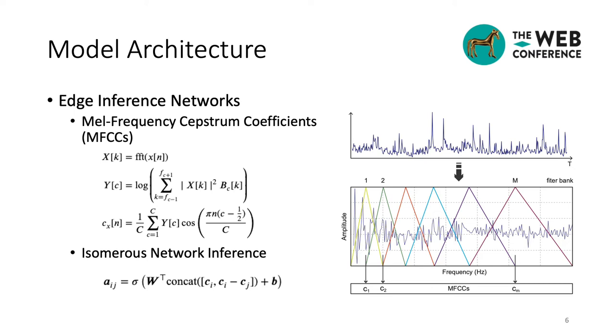Specifically, we choose MEL frequency Cepstrum coefficients, or MFCCs, as great features, which have been widely used in audio signal processing. To obtain MFCCs, fast Fourier transform is applied to the time series, and then several filter banks are designed to get more compact and robust representations of time series than those of normal frequency ones. After obtaining the MFCCs, we treat them as useful features and learn a fully connected layer to infer isomerous spatial dependencies among time series, which will be the spatial input of the GCNs.